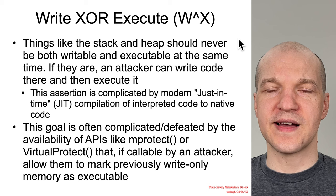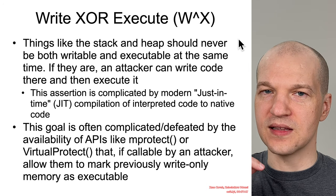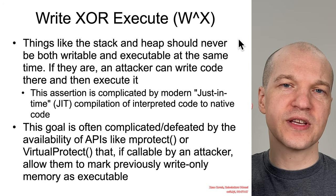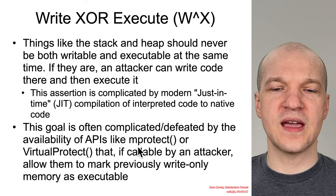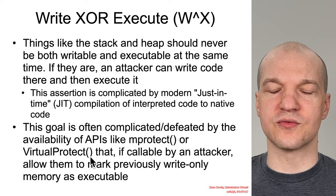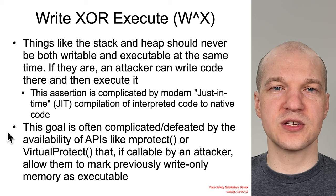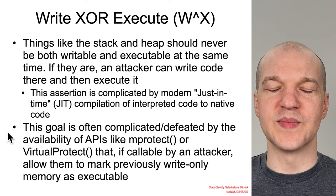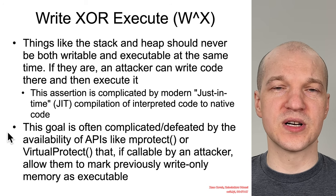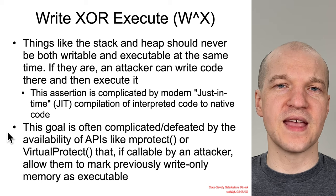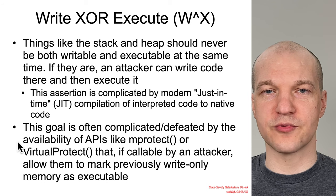Additionally, if an attacker has the ability to get code execution, instead of jumping into their code immediately, they can potentially call some other function. So instead of returning to their code, they return to some other function. There are standard APIs like mProtect or VirtualProtect on Windows that are specifically for the purpose of changing the permissions on memory. So you could have the stack or the heap marked as read-write, and then if the attacker has the ability to call one of these functions, they can mark it executable — essentially a rewrite of execute.